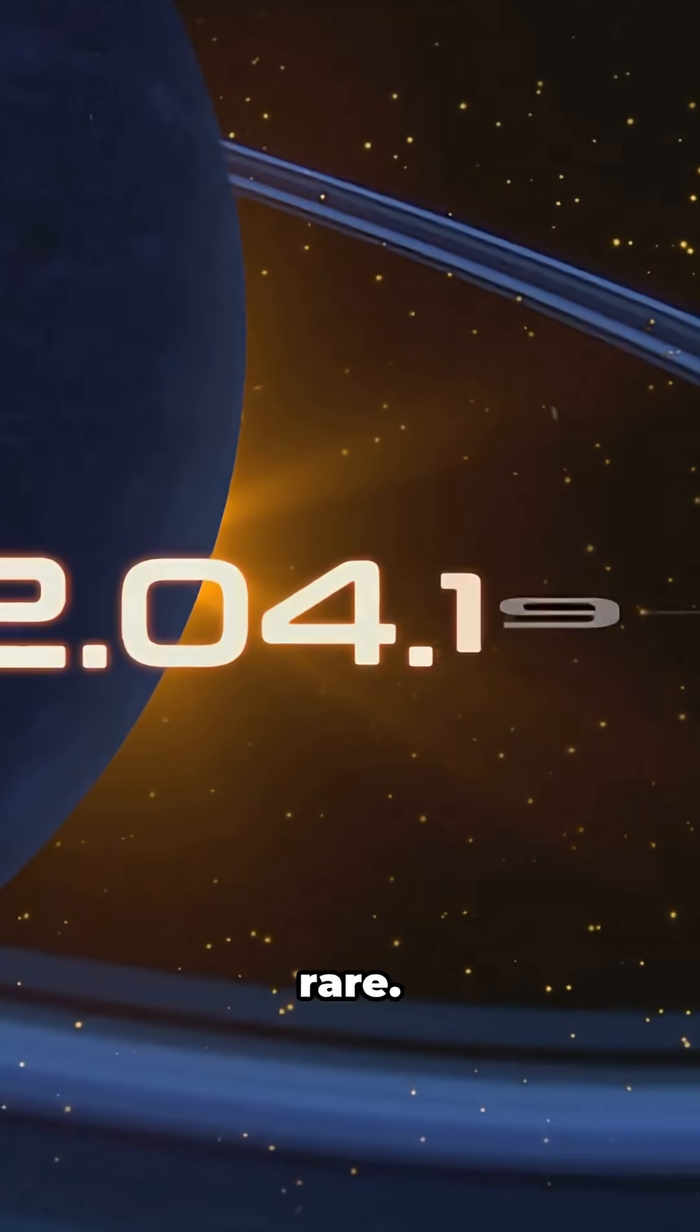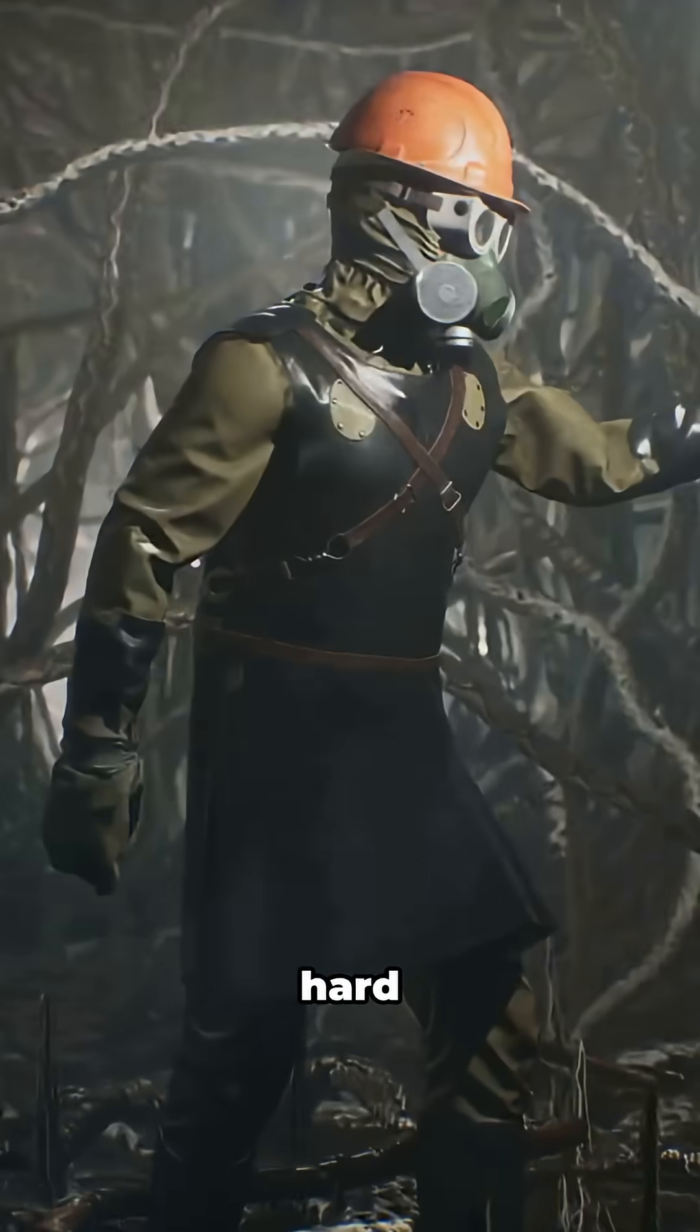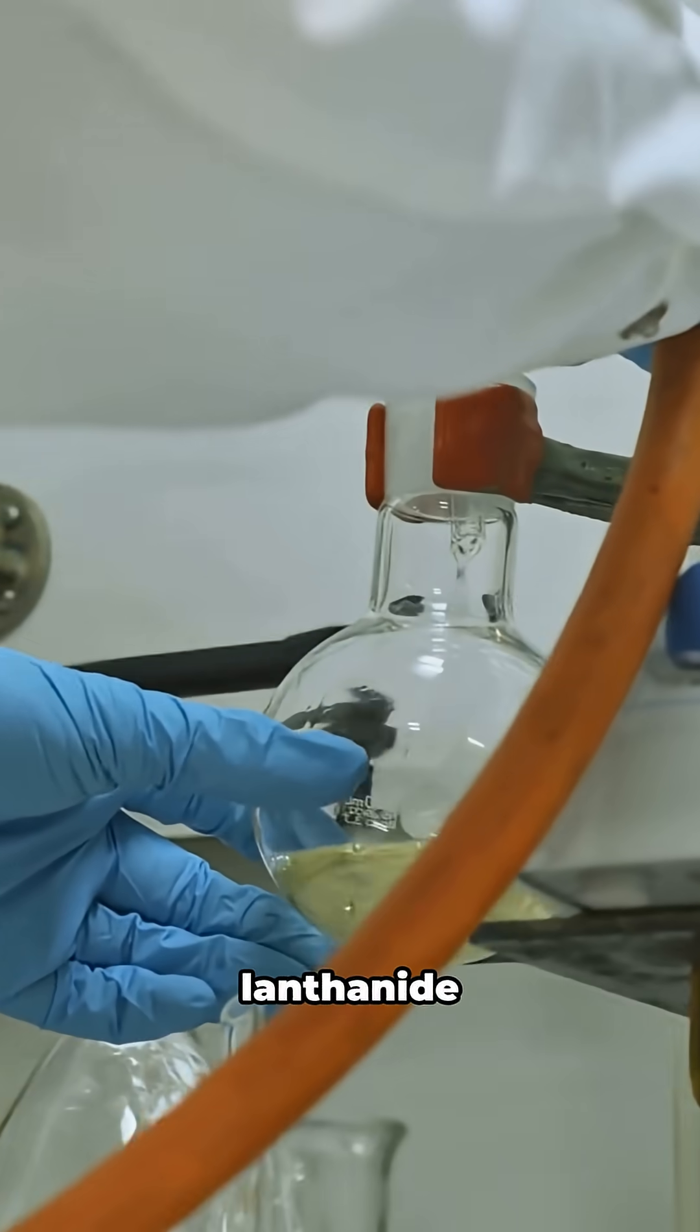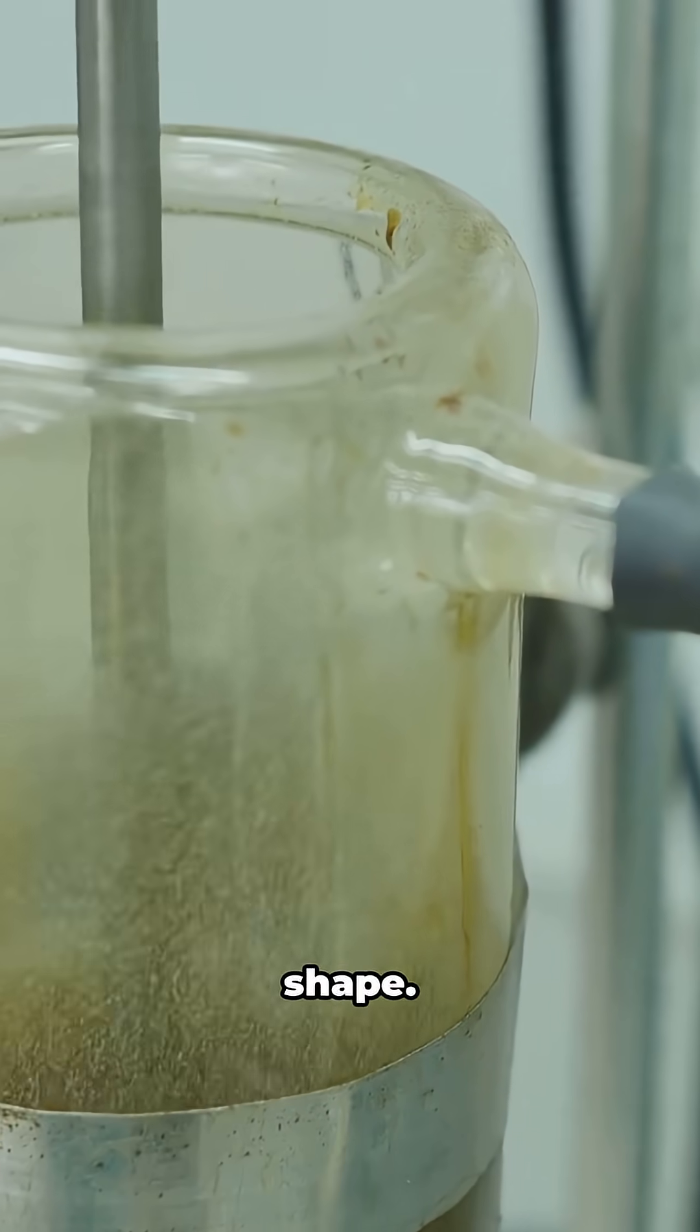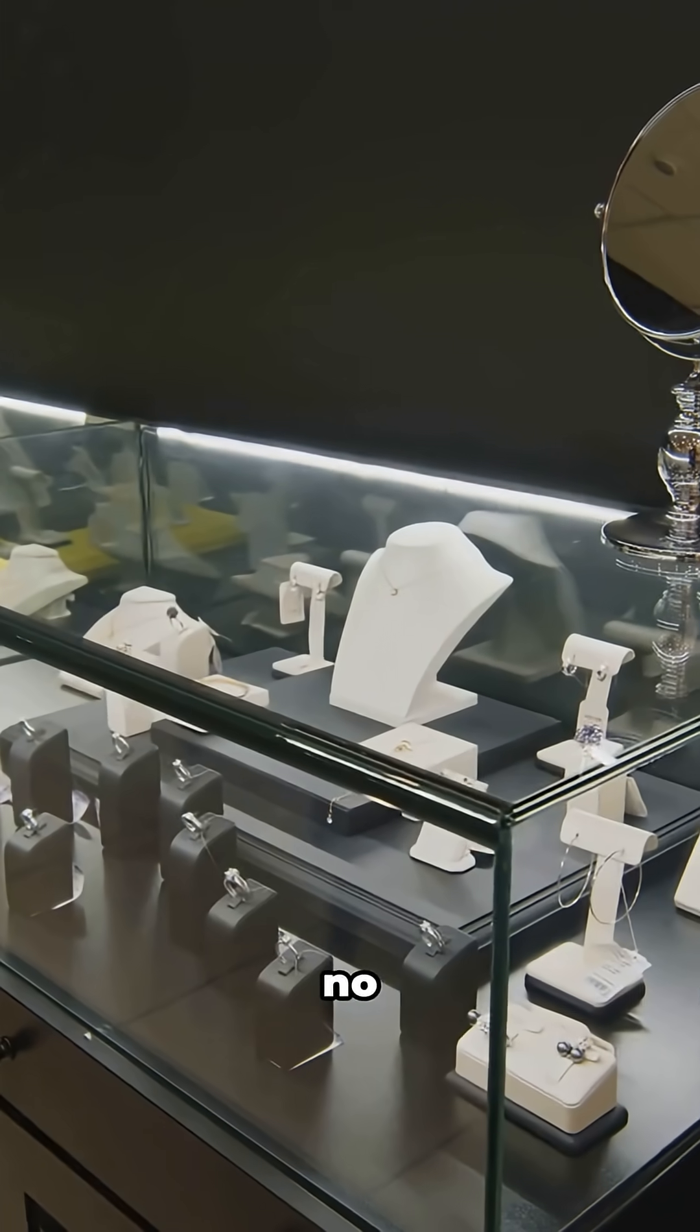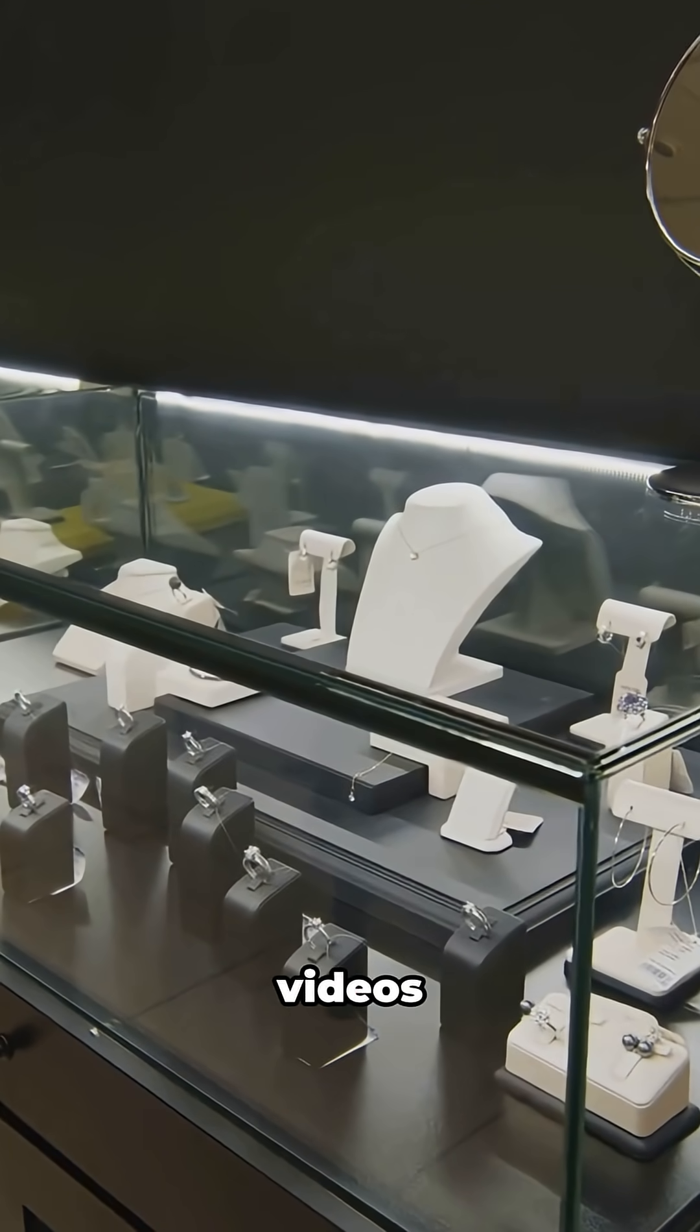It's super rare, ridiculously hard to separate from its lanthanide cousins. Imagine sorting sand by grain shape. That's why it's pricey and why no lutetium jewelry haul videos exist.